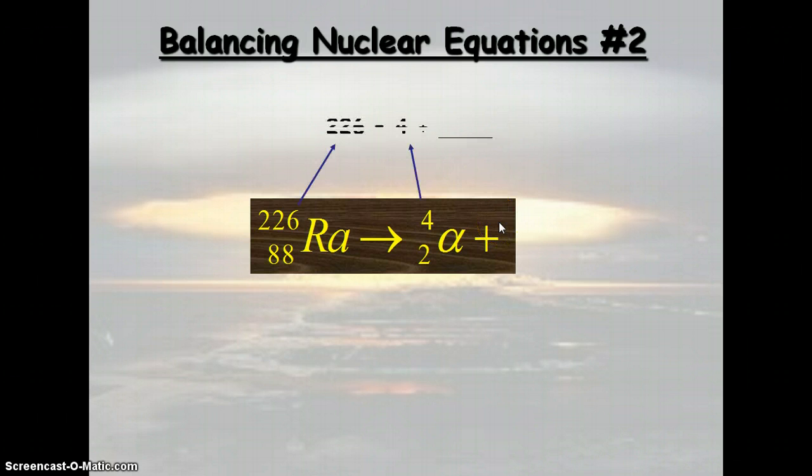We're going to use the same facts as we did before. We know that 226 equals 4 plus something. So that'd be 222. That's the mass number of the unknown.